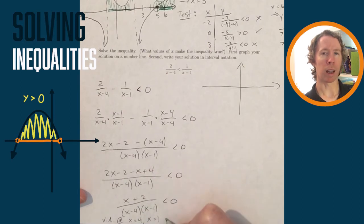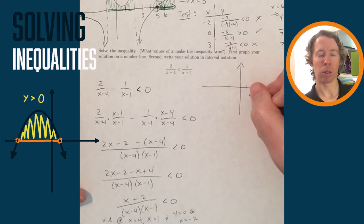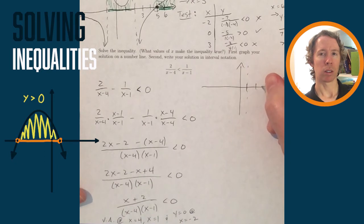And then where will we get an x-intercept? x-intercepts happen when y is equal to 0. So for this fraction to be equal to 0, the numerator has to be 0. That's at x plus 2 equals 0. So x has to be negative 2 for that to happen.